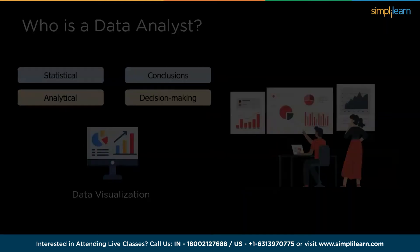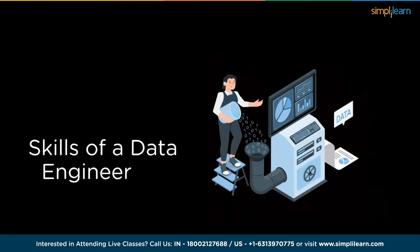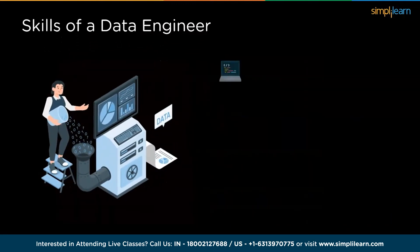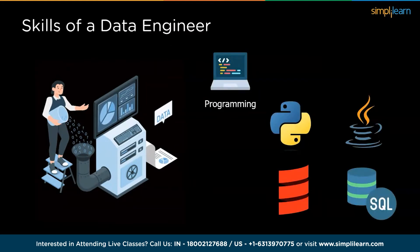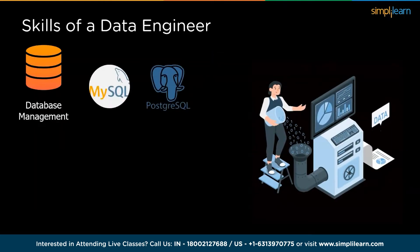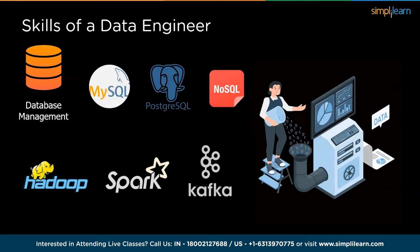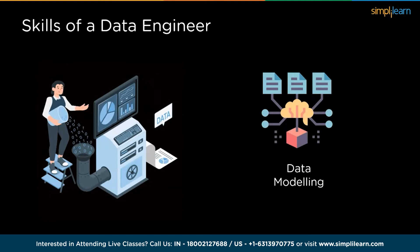Now moving on to the skills of a data engineer. First is programming — proficiency in programming languages like Python, Java, Scala, or SQL is crucial for building data pipelines and integrating various data sources. Next is database management — strong knowledge of database management systems such as MySQL, NoSQL, and big data technologies like Hadoop, Spark, or Apache. Then there is data modeling — understanding how to design efficient data models to store and organize data optimally for analysis.